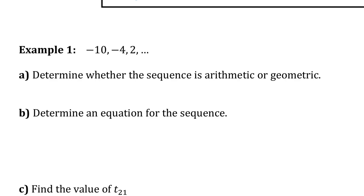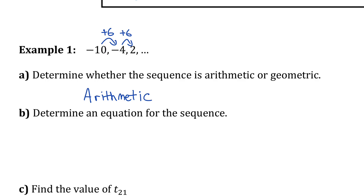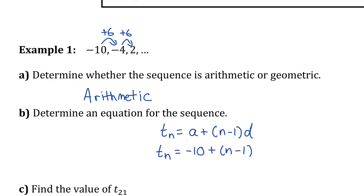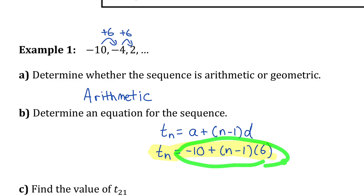Instead, let's check if there's a constant difference. In the first pair, negative 4 minus negative 10 is 6, so to get from negative 10 to negative 4, I add 6. And then 2 minus negative 4 is 6 again. Since there is a constant difference, this is an arithmetic sequence. The formula for the general term is Tn equals negative 10 plus n minus 1 times 6, where a is negative 10 and d is 6.